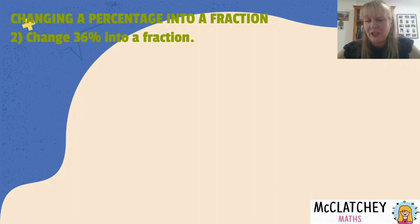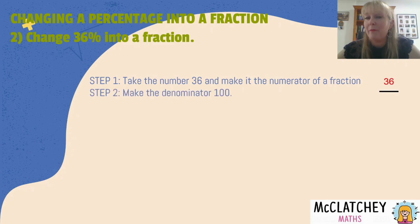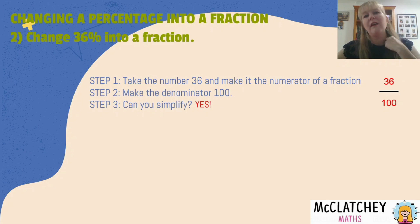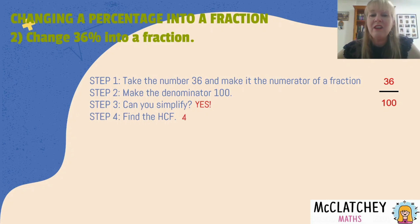Let's turn 36% into a fraction. First, take the number 36 as the numerator — it goes on top. Step two: make the denominator 100. Step three: ask yourself, can I simplify? Well, 36 is an even number and 100 is an even number, so yes, we can simplify. But just knowing they're both even is not enough — we need to find the highest common factor, the HCF. Looking at both numbers 36 and 100, this is where knowing your times tables is really important. The highest common factor is 4 — it goes into 36 nine times and into 100 twenty-five times. So learn your times tables.